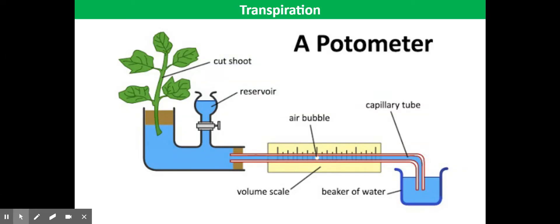A piece of apparatus called a potometer can be used to estimate the rate of transpiration. What is actually measured is the rate of water uptake by a leafy shoot.